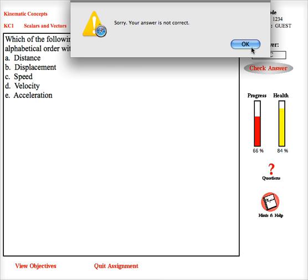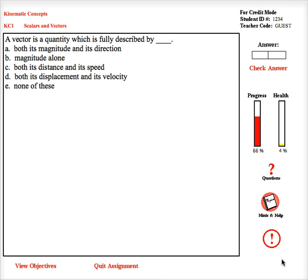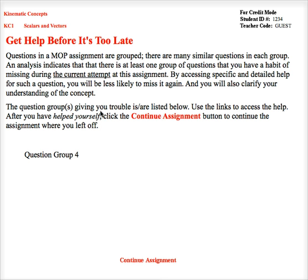Once I've gotten it wrong twice, the same type of question, one thing that happens is there's this little exclamation point that pops up. If I click it, it says, get help before it's too late. At this time, I can click on question group four.